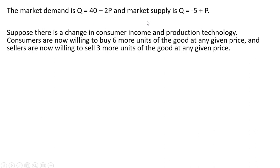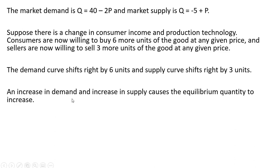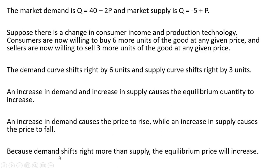So our original market demand and market supply — we want to see what happens when consumers are willing to buy six more units at any given price, and sellers are willing to sell three more units at any given price. The demand curve shifts right by six units and the supply curve shifts right by three units. An increase in demand and increase in supply causes the equilibrium quantity to increase. An increase in demand causes the price to rise, while an increase in supply causes the price to fall. Because the demand curve shifts more to the right than the supply curve, the equilibrium price will increase. Let's do the math to show that.